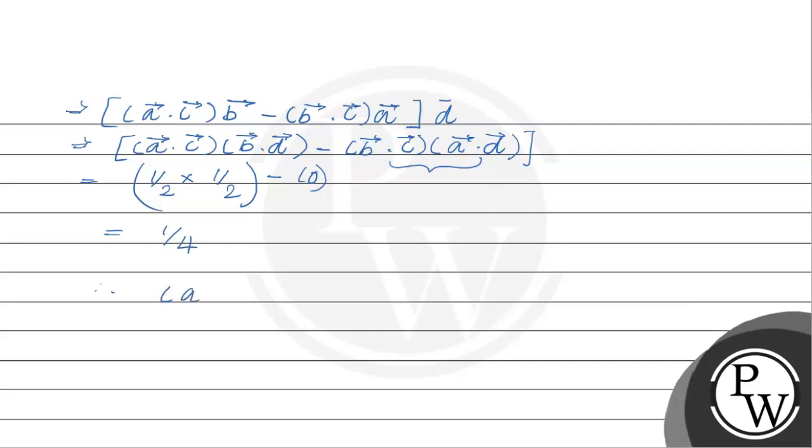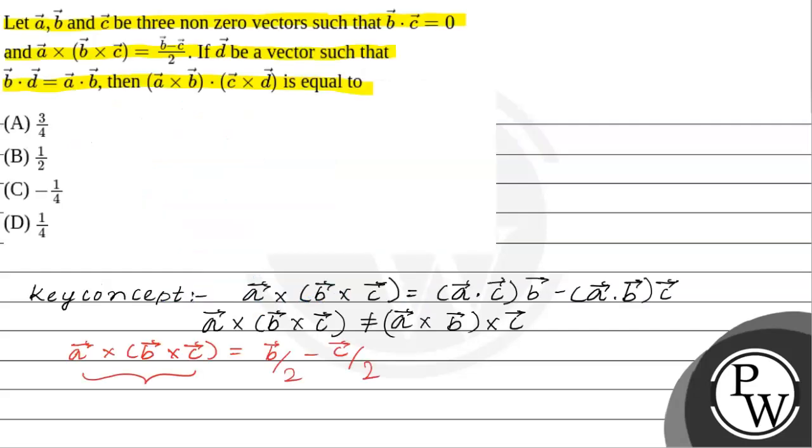the value of (a×b)·(c×d) is equal to 1/4. This is the correct answer. Hope you understood the solution. Good luck.